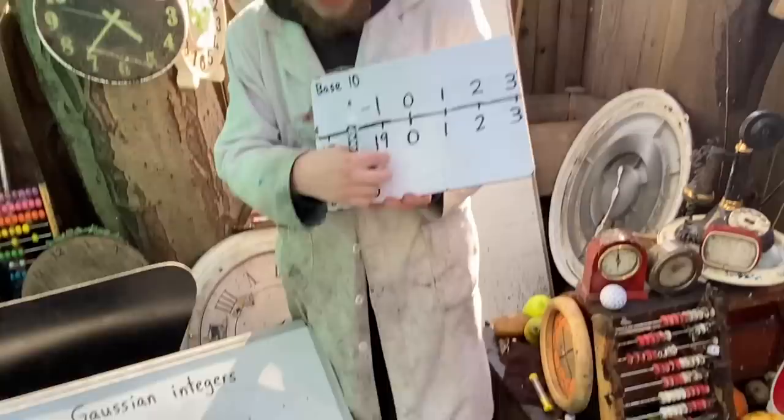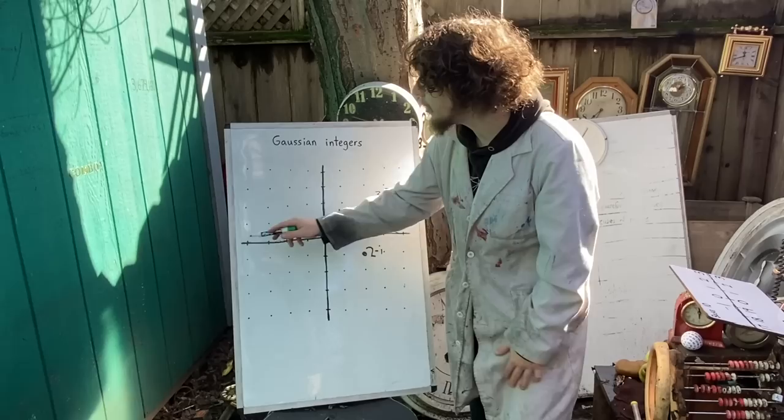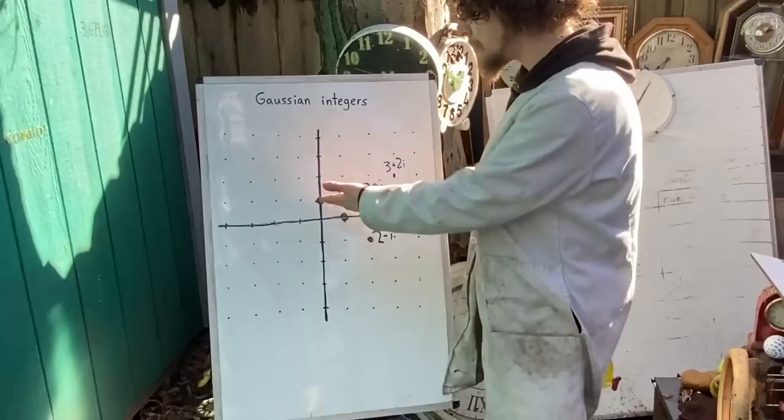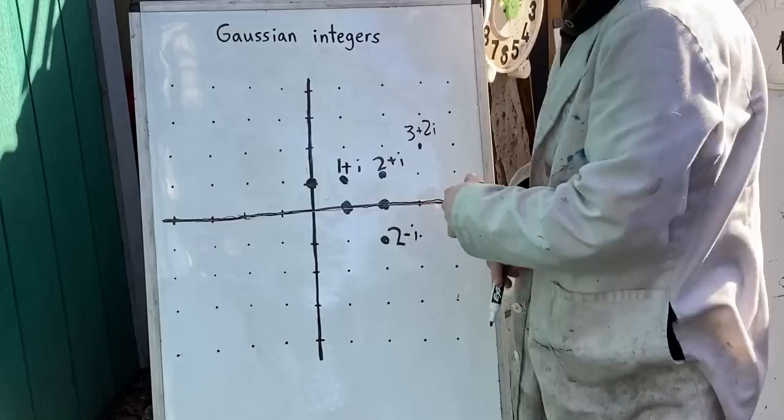We wouldn't be able to achieve that if our base was numbered after something on this real number line, like base positive something or base negative something. But what if our base was a complex number?